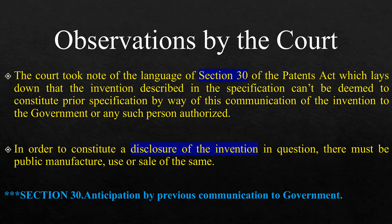The court took note of the language of Section 30 of the Patent Act, which lays down that the invention described in the specification cannot be deemed to constitute prior specification by way of communication of the invention to the government or any person so authorized. In order to constitute a disclosure of the invention in question, there must be public manufacture, use, or sale of the same.